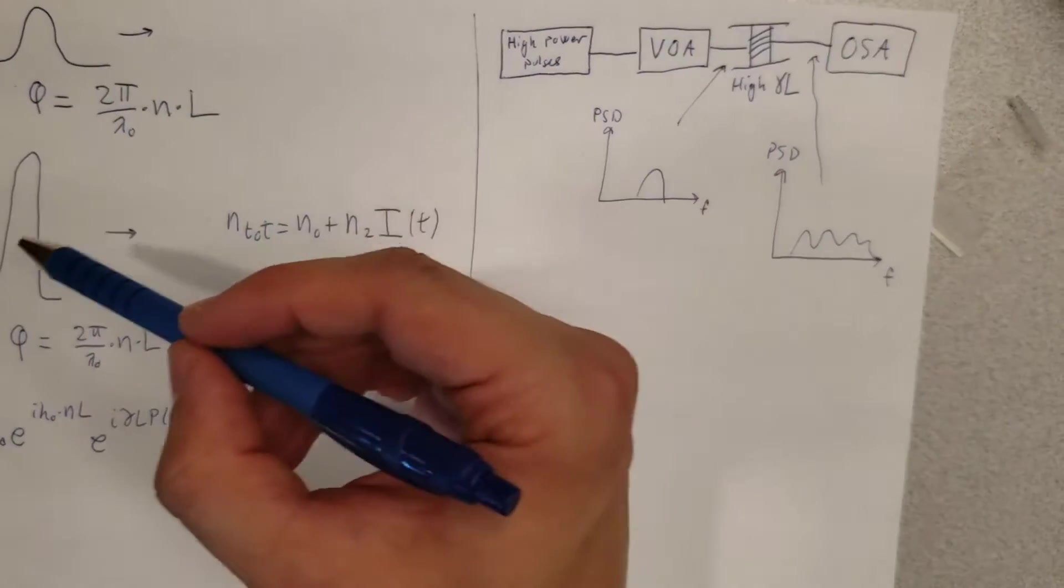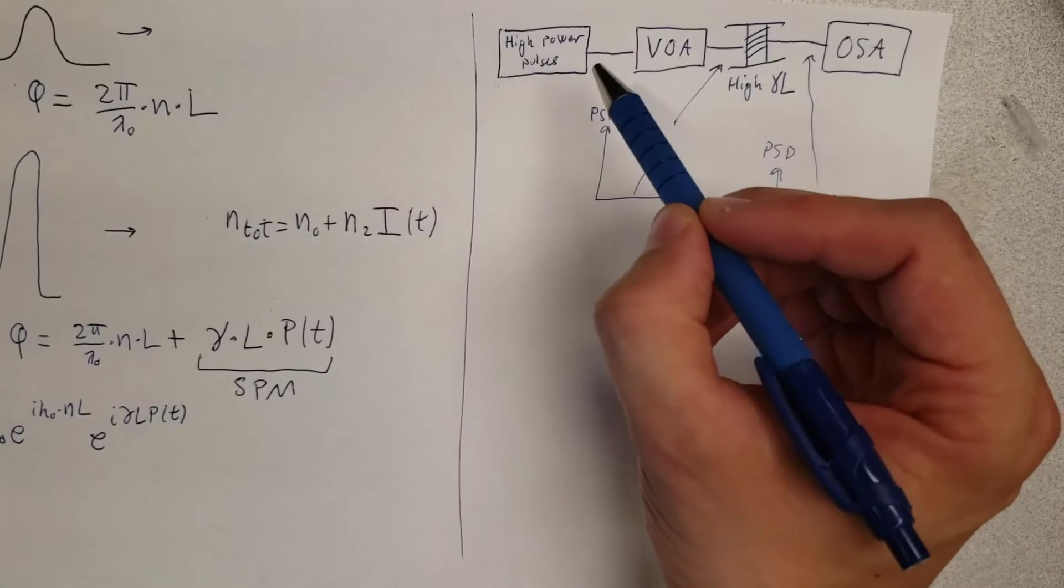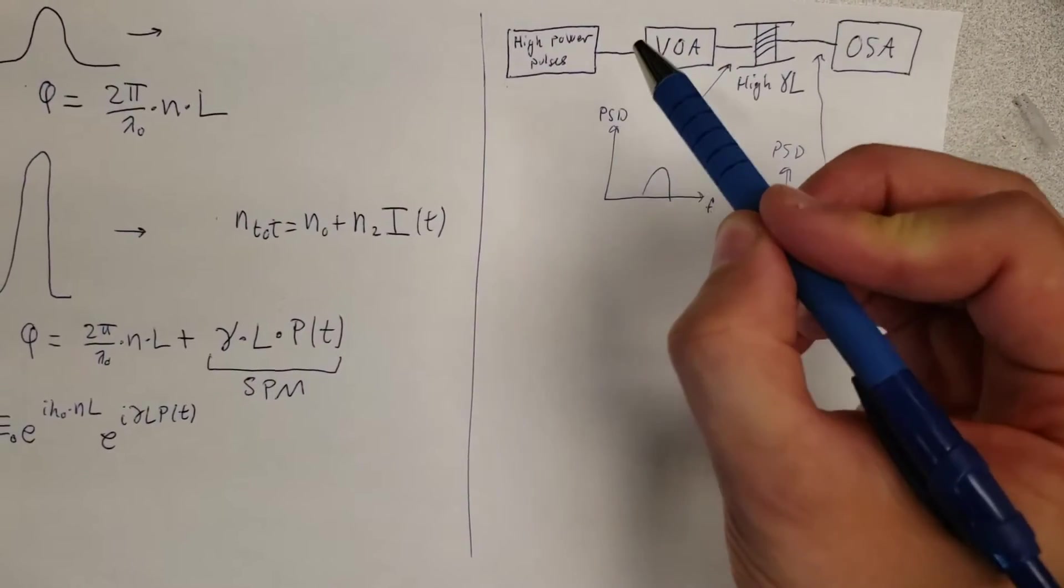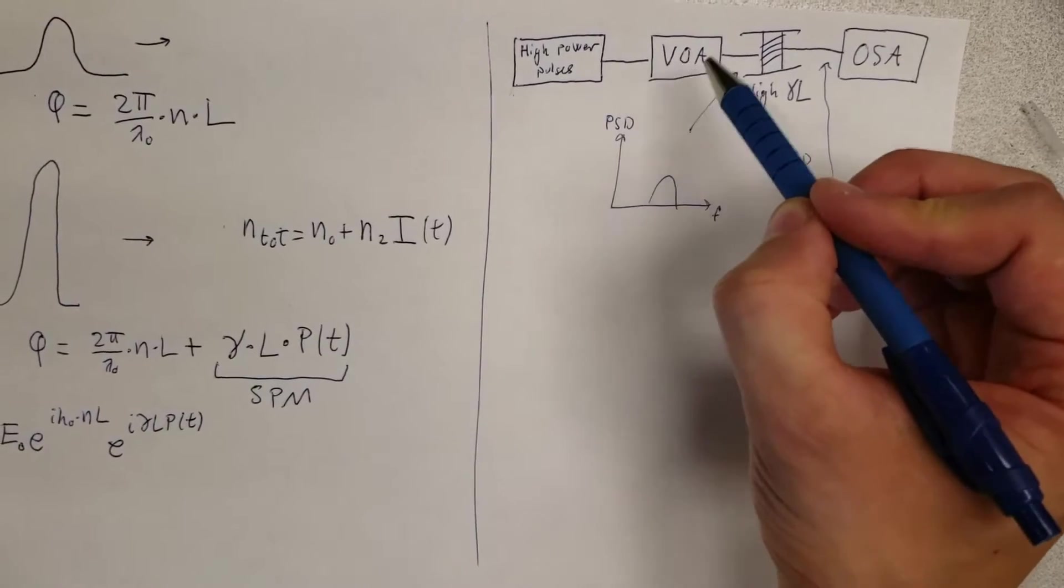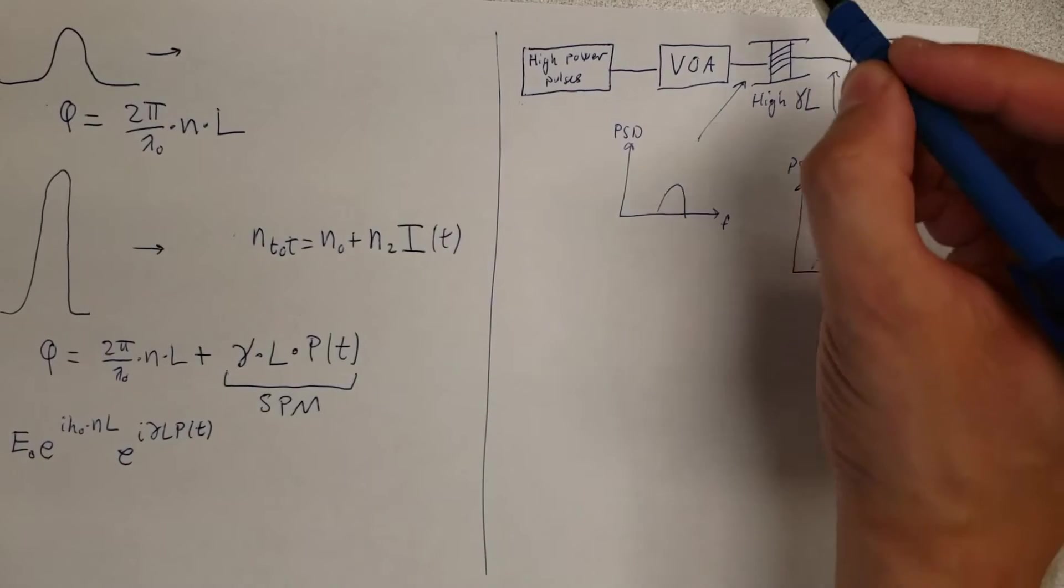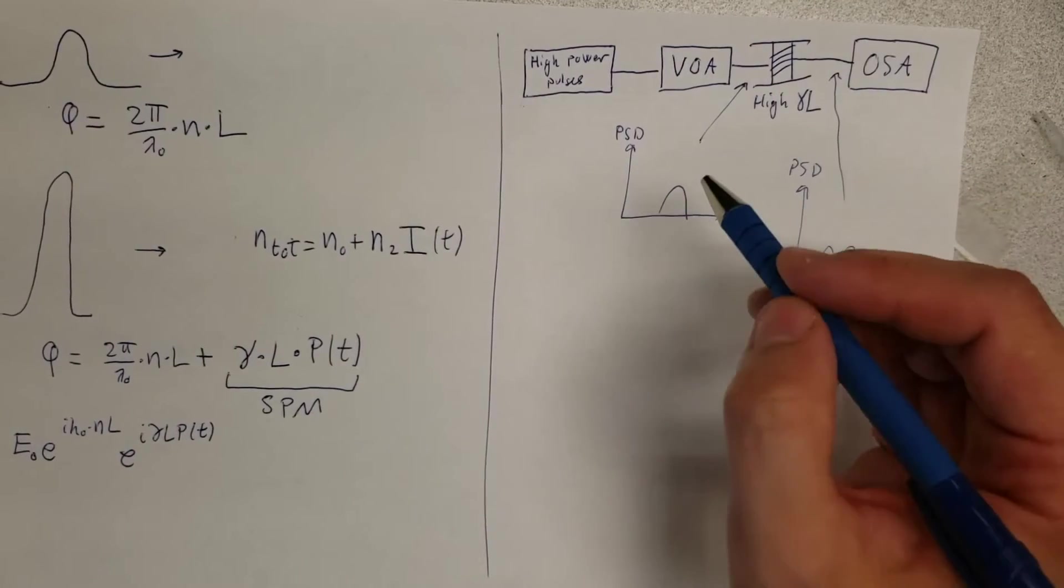That's going to have a huge slope. We're going to send this into a variable optical attenuator so that way we can first make the pulse power very low and then gradually decrease the attenuation to make the pulse power higher, and then see how the spectrum changes at the output of a fiber with a very high non-linearity.